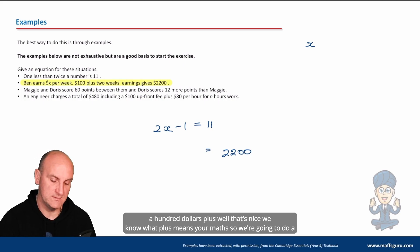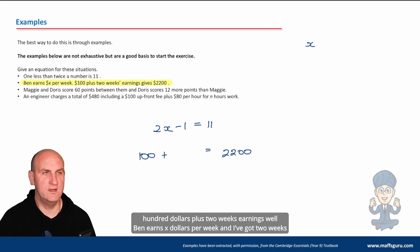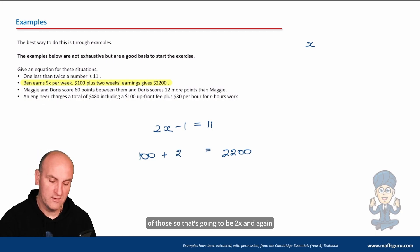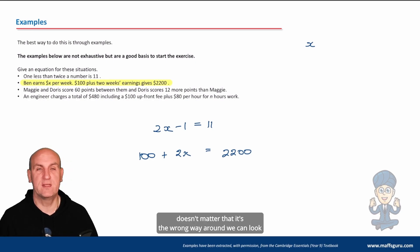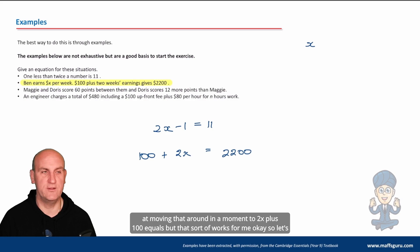But what is it? Ben earns x dollars per week, a hundred dollars plus - well that's nice, we know what plus means in maths - so we're going to do a hundred dollars plus two weeks earnings. Well, Ben earns x dollars per week and I've got two weeks of those, so that's going to be 2x. So 100 + 2x = 2200. Doesn't matter that it's the wrong way around, we can look at moving that around in a moment. That sort of works for me.